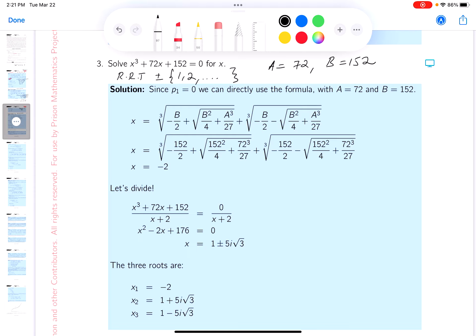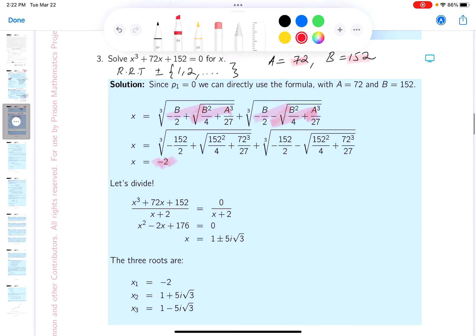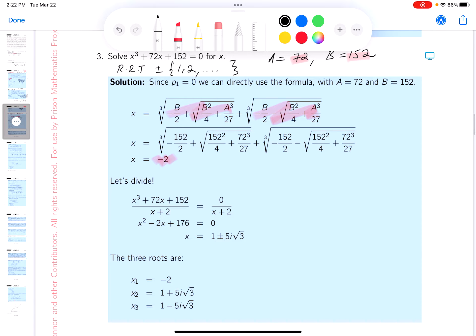So I plug these numbers in into the formula. And if you do all that arithmetic, you get minus 2. Then what? I'm going to use that root to figure out the other factors or other roots.